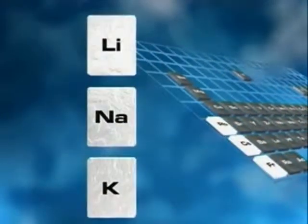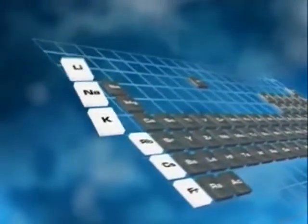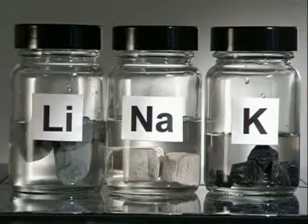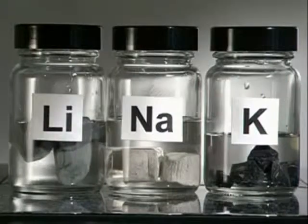Group 1 of the periodic table is a group of reactive metals. Lithium, sodium and potassium are at the top. These metals are so reactive, they have to be stored under oil and need to be handled with care.